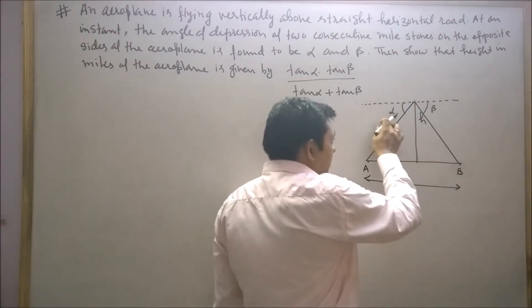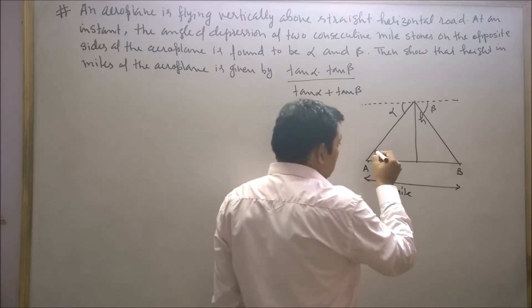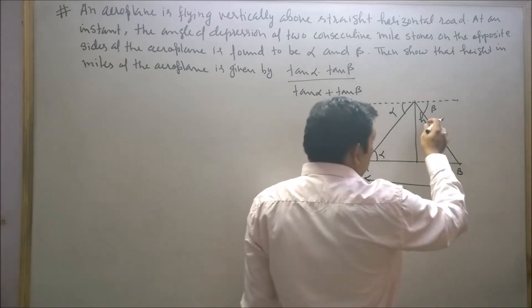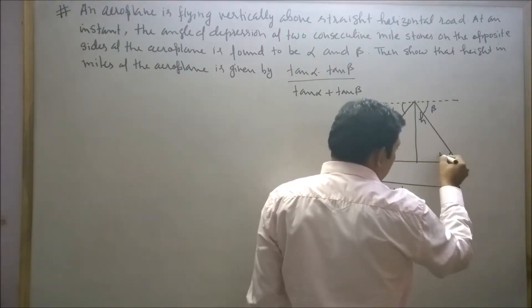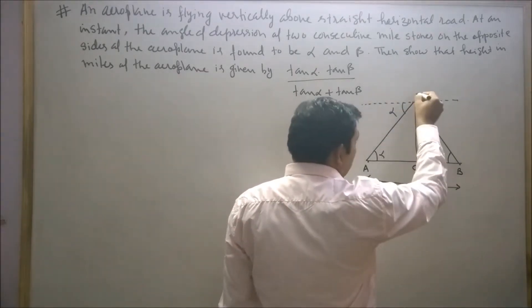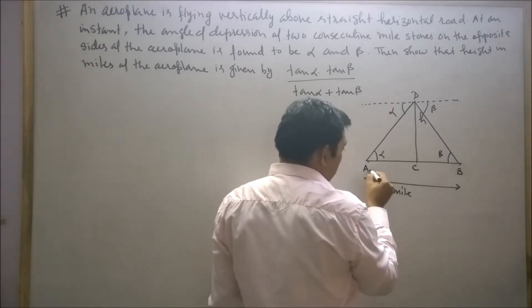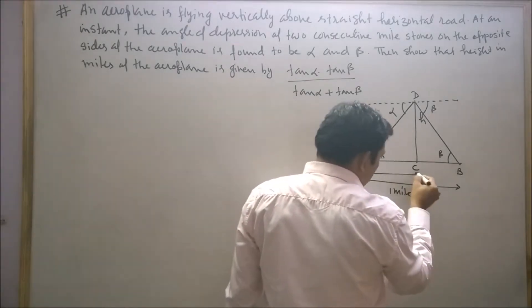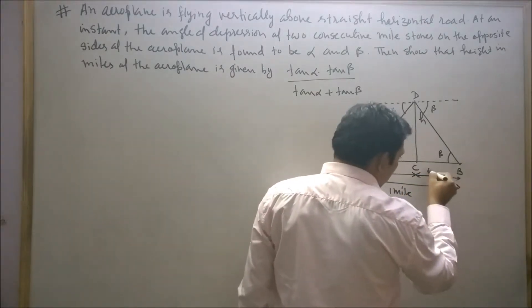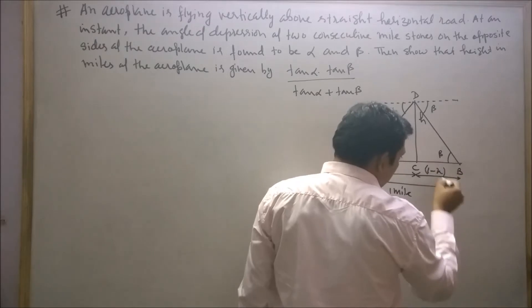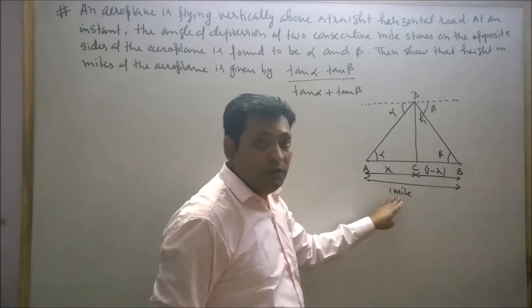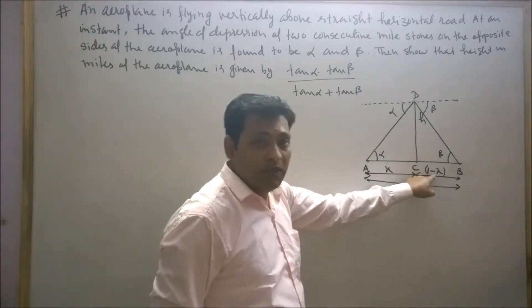So if this angle is alpha, these alternate angles are also alpha since alternate angles are equal. If this angle is beta, this will also be beta. Let's say this point is C and this point is D. Let AC equal X, then BC will equal 1 minus X miles.